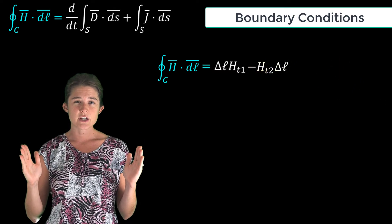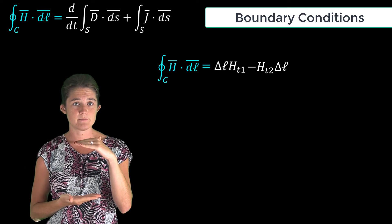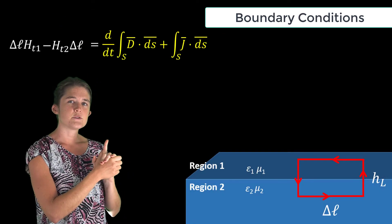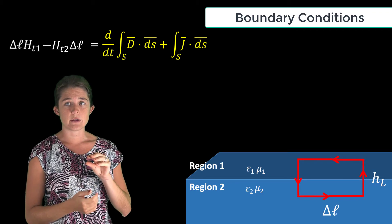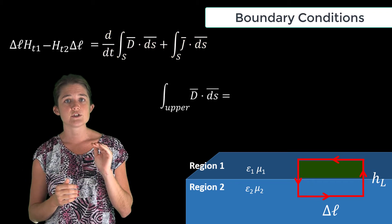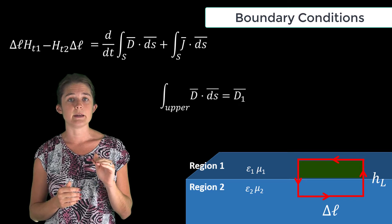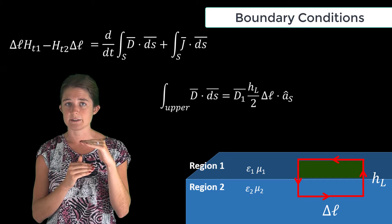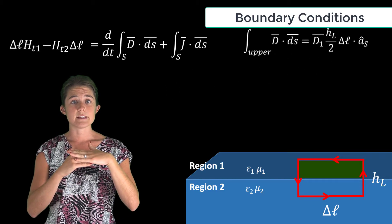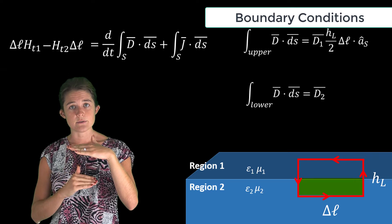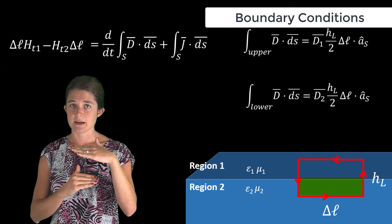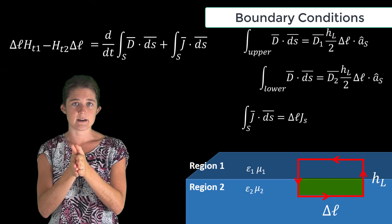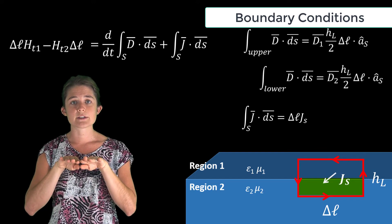Now let's look at the right-hand side of the equation. Since we're assuming the loop is very small, the D field going through the upper half of the loop is just D1 times the area of the upper half, which is HL over 2 times delta L. Similarly, the D field through the lower half is D2 times HL over 2 times delta L, and the current through the loop is J_s times delta L, where J_s is the surface current on the boundary directed through the loop.